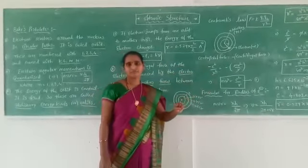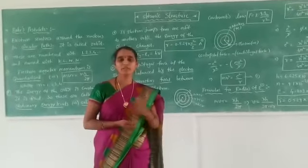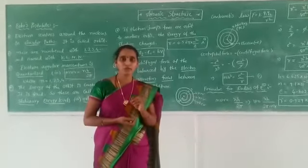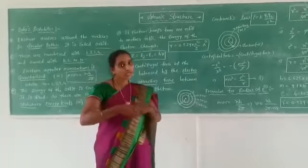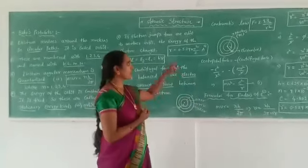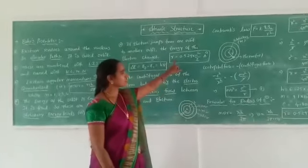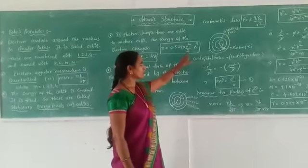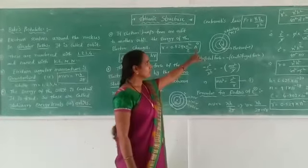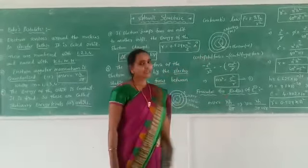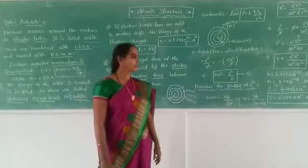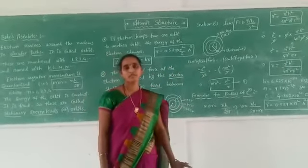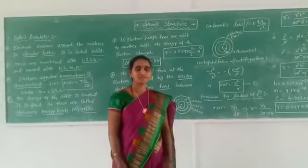This derivation is for the hydrogen atom only. Hydrogen has atomic number Z = 1 and electronic configuration 1s¹ — it contains only one electron. For hydrogen-like species, the formula becomes r = 0.529 × n² / Z Angstroms, where the atomic number Z is introduced. In this way, we can calculate the radius of the electron in Angstroms for different atoms. This is one of the important formulas derived using Bohr's postulates. Thank you all.